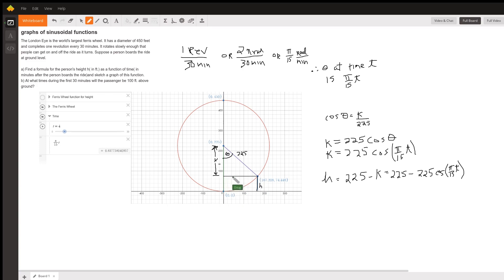If we draw this auxiliary line right here, we create a right triangle. And if we could find k and subtract k from 225, we'd have what's left over, which is this h value right here. So that's the basic strategy.